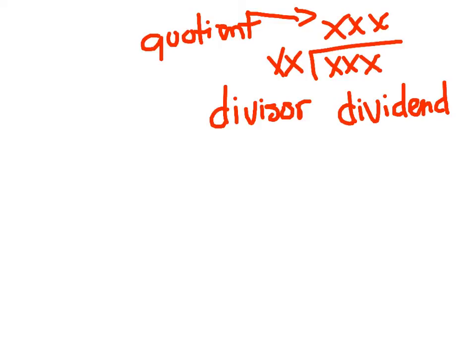Alright, between you and me, sometimes you can take this dividend — what you're dividing right here — and break it into smaller parts using place value, and that will help you divide easier. Then you just add the quotients from those parts to get your final answer.